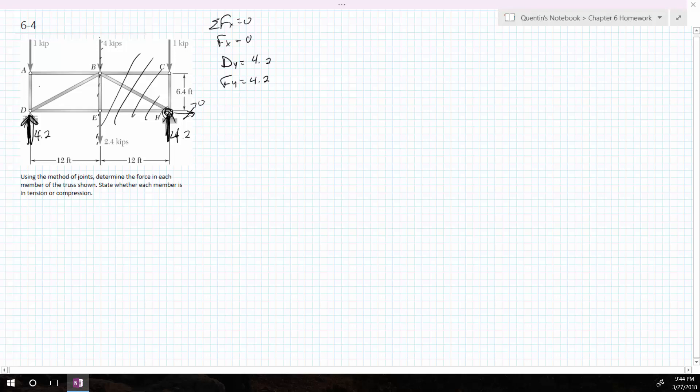Okay, so when we're doing the method of joints, we have two equations, because we're looking at a single point. So the moment equation just tells you that zero equals zero. So we have two equations, and those are sum of the forces in X and sum of the forces in Y. So we can only solve for two unknowns.